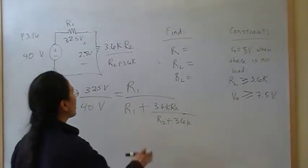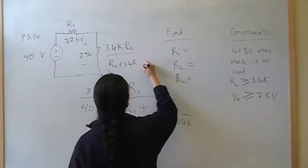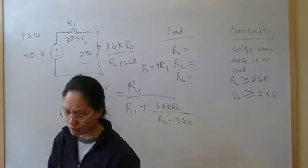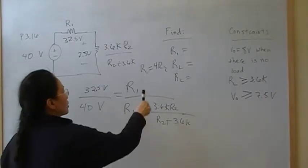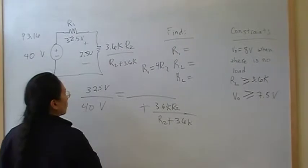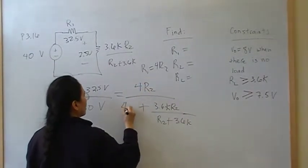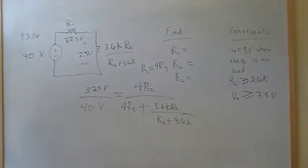Because we have two equations and two unknowns. Now, I did erase it, but recall that we had R1 is equal to 4 R2. Okay? So now, we can replace this with 4 R2. Now, we have one equation and one unknown, and we can solve for it.